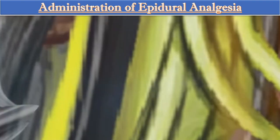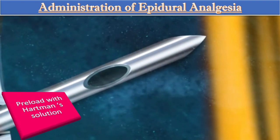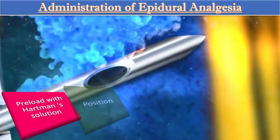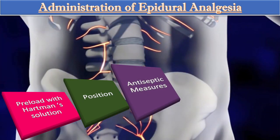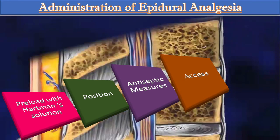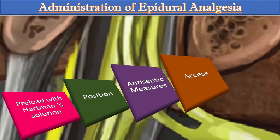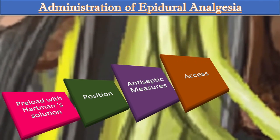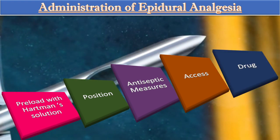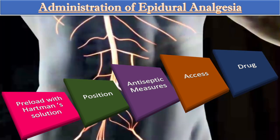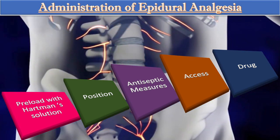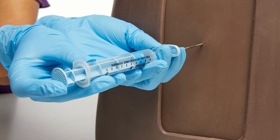For the administration of epidural analgesia: first, preload with Hartmann's solution; position is usually sitting or left lateral; antiseptic measures are followed. Access is established after infiltration of local anesthetic at L3-L4 level; the needle is advanced to the epidural space, position is confirmed, and the epidural catheter is inserted. The drug given is 0.25% bupivacaine 10 ml after a test dose, repeated after two hours.